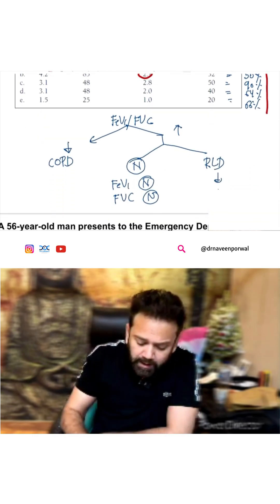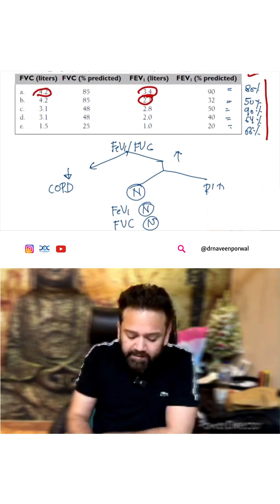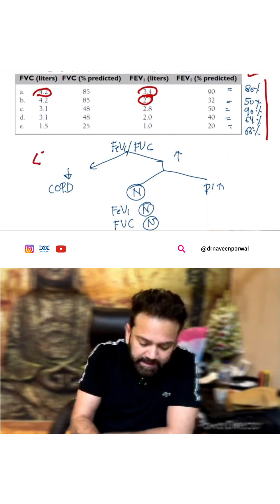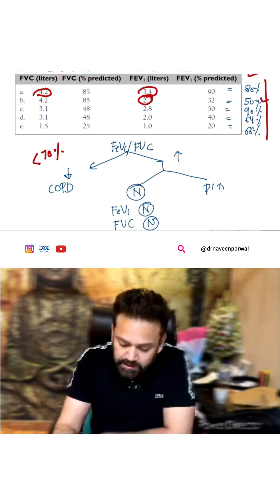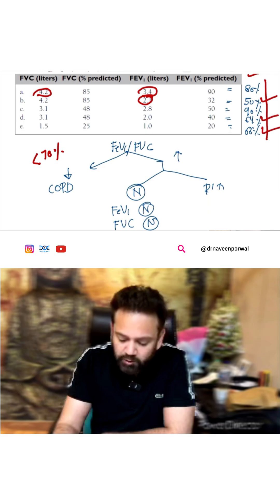Now, already you know FEV1 by FVC - if it is less than 70 percent, it is COPD, clear cut. So, this is COPD, this is COPD, this is COPD.